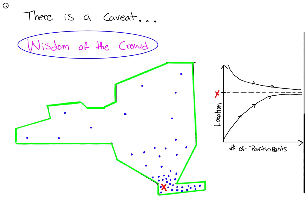There is a caveat though - the concept of wisdom of the crowd and the law of large numbers. If you're familiar with GeoGuessr, this will be intuitive. I've drawn the state of New York in green and asked 100 people to independently guess the location of the Empire State Building. X marks the true location. Even though some guesses are scattered, many are condensed around the true location. The wisdom of the crowd says that with enough independent guesses from a large sample size, the average will converge very closely to the true value.